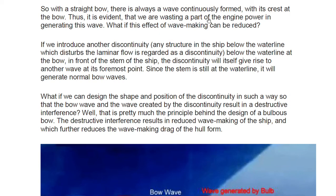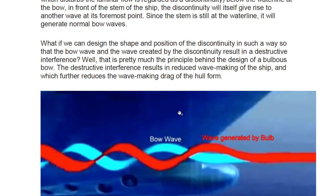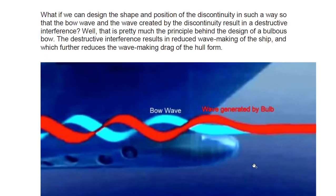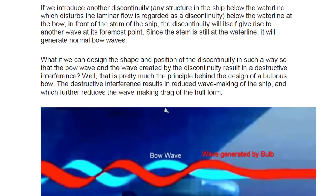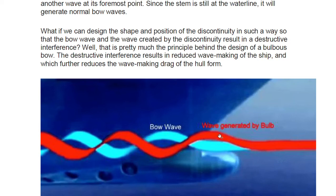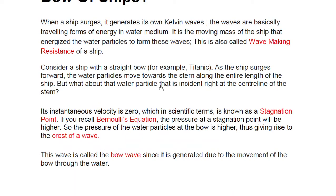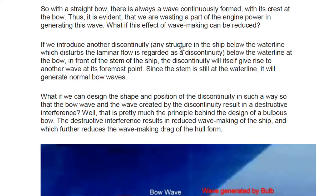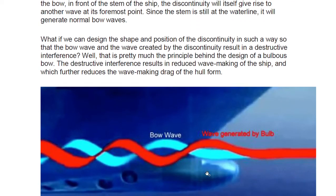With a straight bow, a wave is continuously formed with its crest at the bow. This is shown in the diagram — the crest generated at the bow portion when we have a straight stem. We are therefore wasting a part of energy in generating this wave. If we introduce a discontinuity — any ship structure below the waterline will disturb the laminar flow — we can generate a second wave.